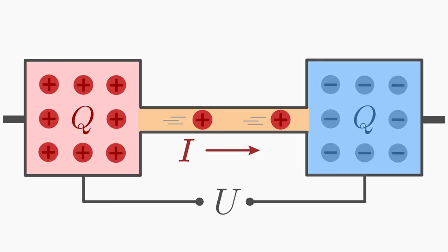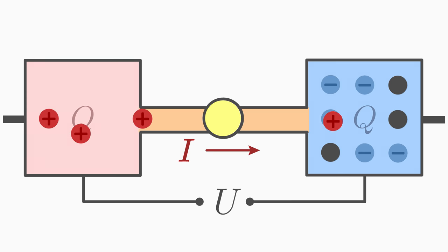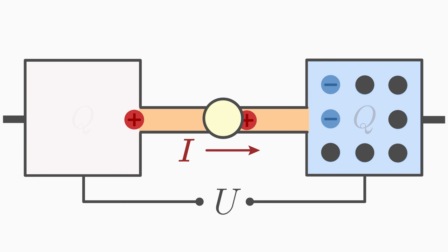We can exploit this current to make a lamp light up. The charges move and move, but with time, the number of positive charges in the box decreases. The charge separation decreases, the current decreases, the light shines dimmer and dimmer.